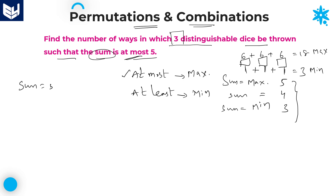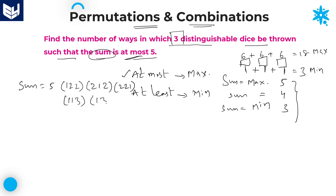For sum equal to 5, the possible cases are: (1,2,2), (2,1,2), (2,2,1) — and also (1,1,3), (1,3,1), (3,1,1). These are 6 possible cases for sum equal to 5.